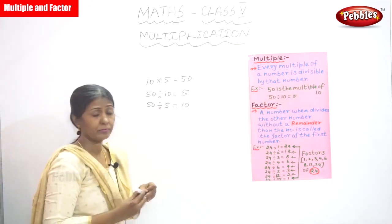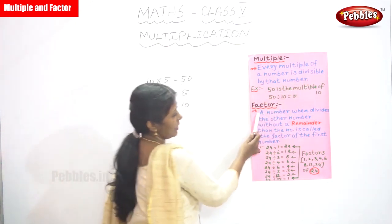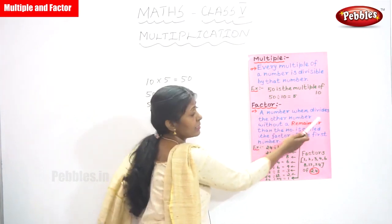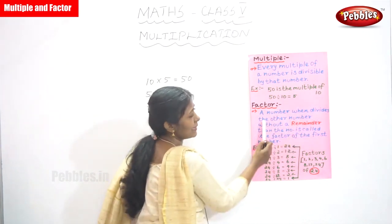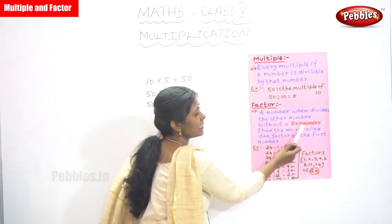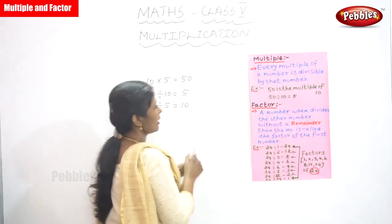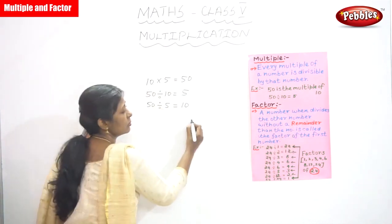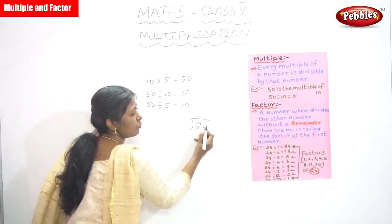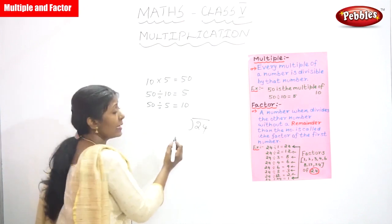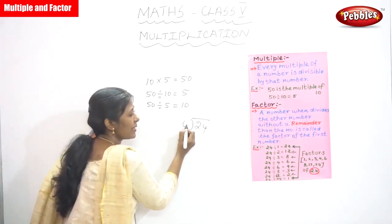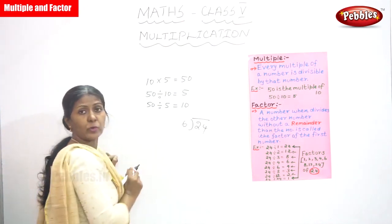Now, factor. A number when it divides another number without a remainder — for example, I am going to divide 24. 24 is divided by 6.